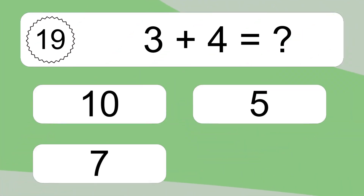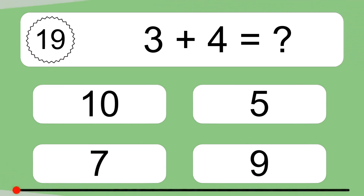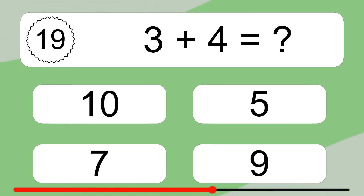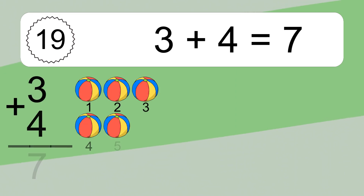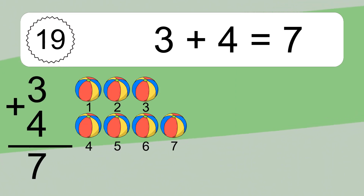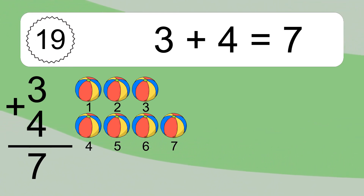3 plus 4 equals what? 3 plus 4 equals 7. Let's count it: 1, 2, 3, 4, 5, 6, 7.